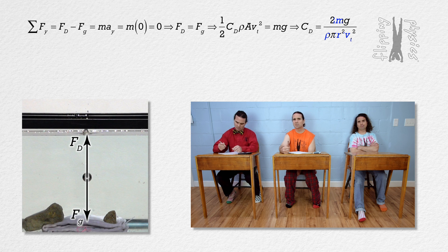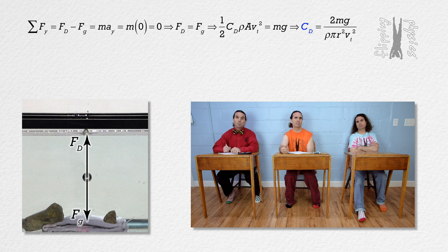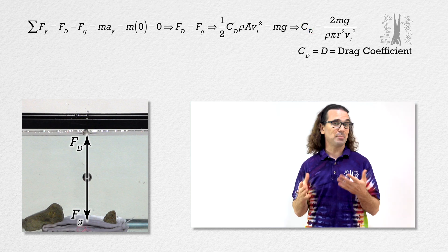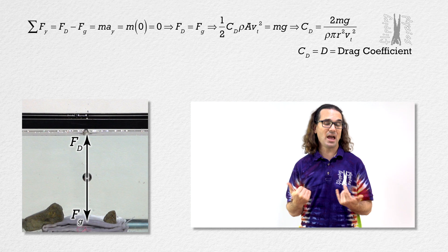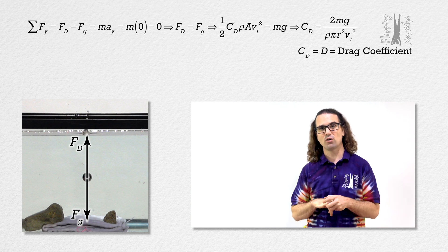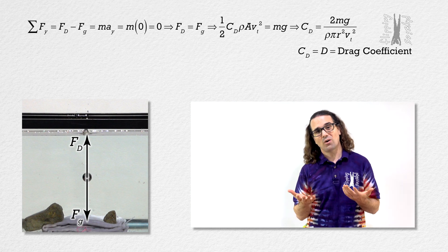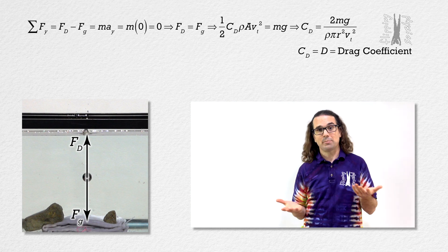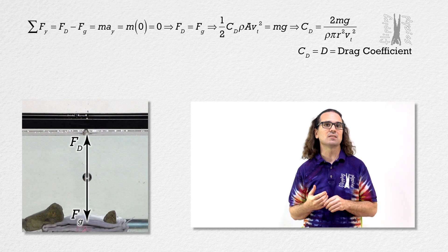Why did you use capital C sub D for coefficient of drag? I thought the symbol for the drag coefficient was just capital D. I've seen both capital D and capital C sub D for drag coefficient, so I thought I would use capital C sub D this time.